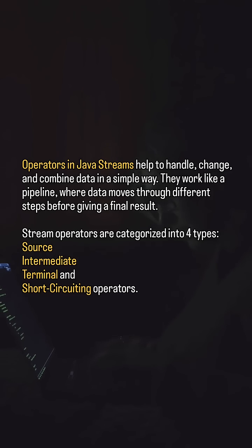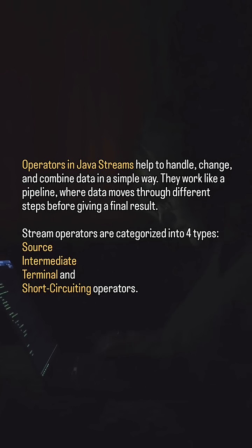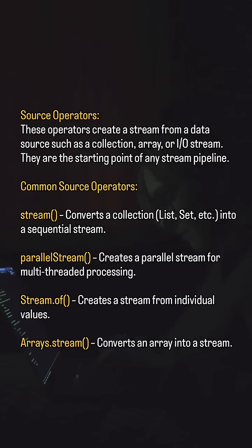Stream operators are categorized into four types: source, intermediate, terminal, and short-circuiting operators.